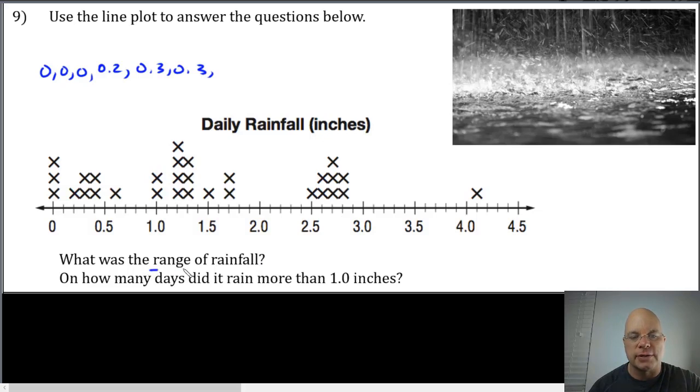Now we can answer the question. What was the range? The range is the high minus the low. The highest rainfall was four and one-tenth inches, and the lowest was zero, so the range is four and one-tenth inches.